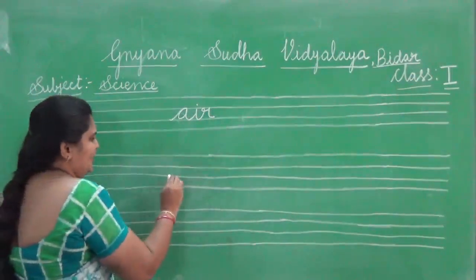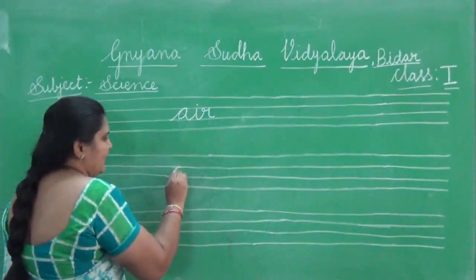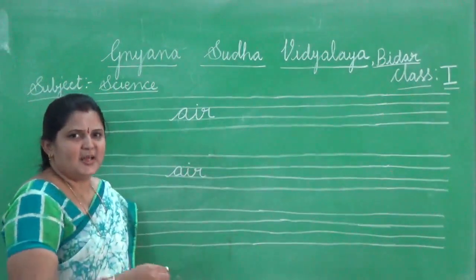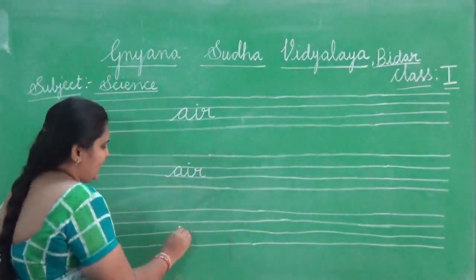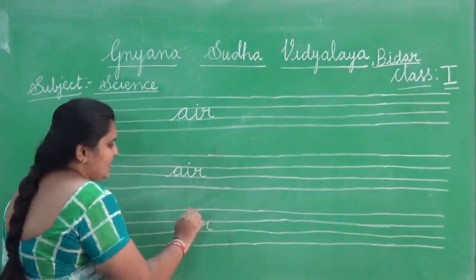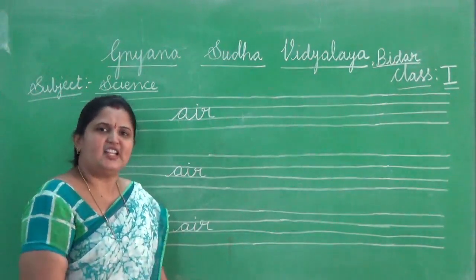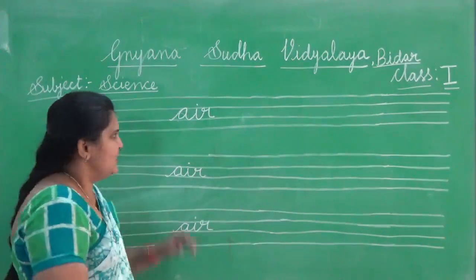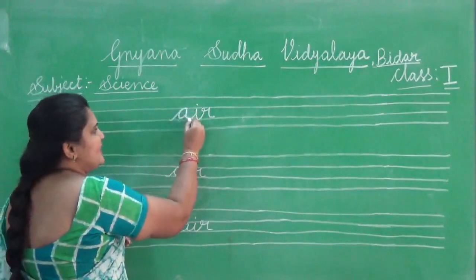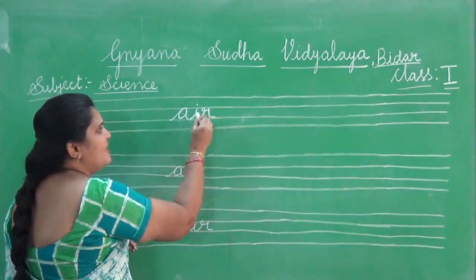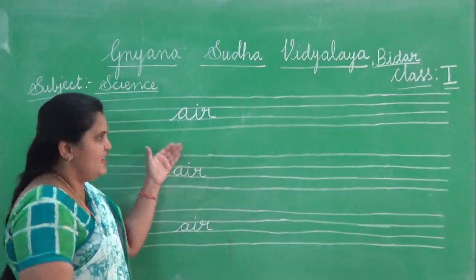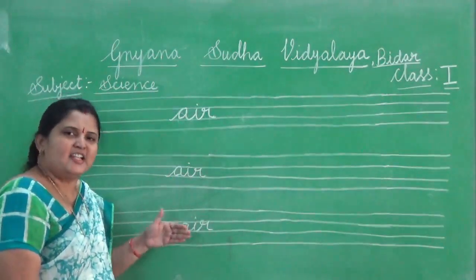So once again I am going to write it. Look at the board. A, I, R. Again: A, I, R. In the same way you are going to write it five times in your classwork. First word — first letter is A, second is I, and third is R. A, I, R. So like this you are going to write it five times in your classwork.